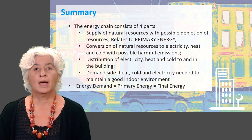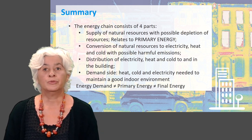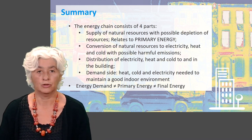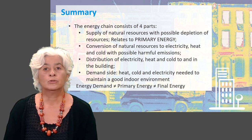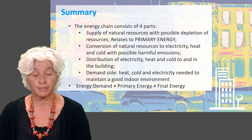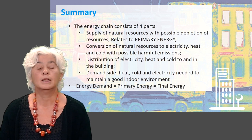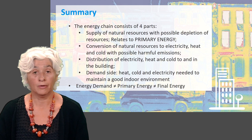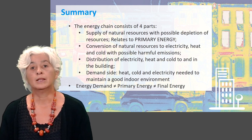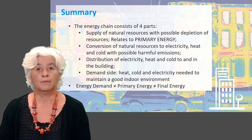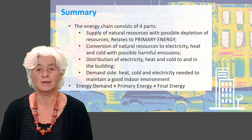To summarize, in this lecture we have seen that the energy chain consists of four parts. First, the supply of natural resources — the energy content of these natural resources is called the primary energy. Second, the conversion of these resources to electricity, heat and cold — during conversion, emissions like CO2 can take place. In a third step, this electricity, heat and cold are distributed to and in the building, and must be enough to satisfy the energy demand. The energy demand is the fourth step in the chain, and is about what is needed by the building and its occupants. Make sure you master the definitions of energy demand, primary energy, and final energy, and be aware of the differences between them.